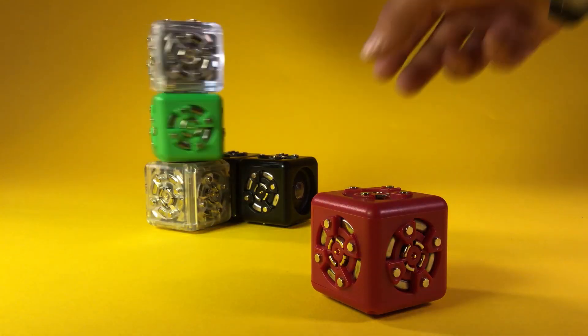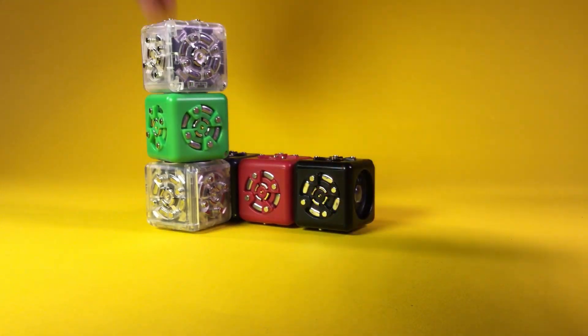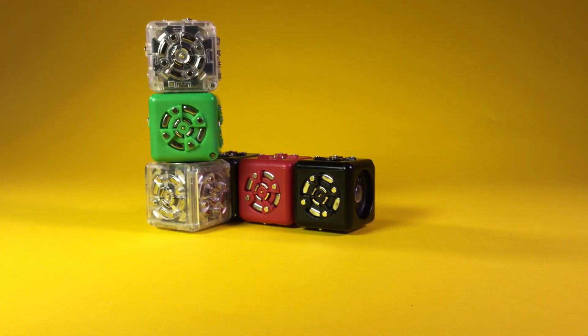When we place the inverse between the sense and act cubelets, the numbers that pass through it are inverted. When the brightness sense block detects a lot of light, it produces a big number. The inverse cubelet turns the big number into a small number, which is passed to the rotate and flashlight cubelets.